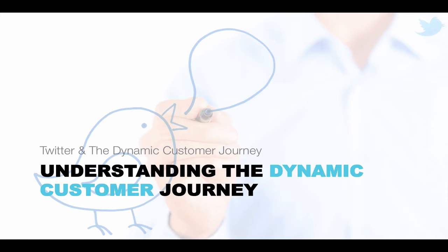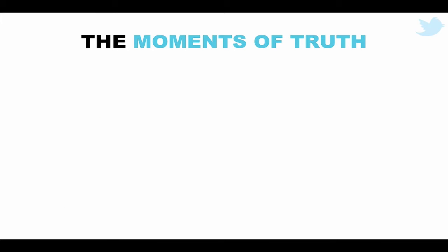To understand where Twitter fits in this mix, we must first understand the traditional mental models of marketing. There are four key stages. This model was originally produced by Procter & Gamble in 2005, and was then developed further by Google and Shopper Sciences back in 2010-2011. I'm going to cover off these four key areas for you now.